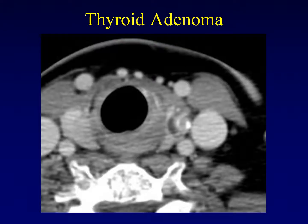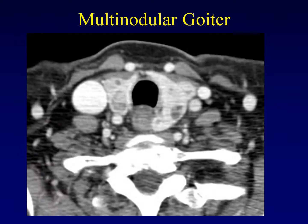Now let's talk about something more benign: thyroid adenomas, which are far more common than thyroid cancers. Adenomas can have cystic, solid, and calcified areas — all in a single adenoma. Often we see a thyroid adenoma in the setting of a multinodular goiter. As long as there are numerous hypodense lesions without malignant features and no dominant mass much larger than the others, we can usually describe it as an adenomatous goiter without requiring further follow-up.